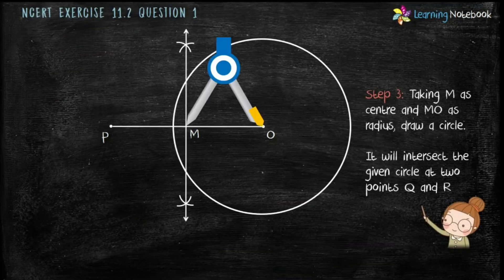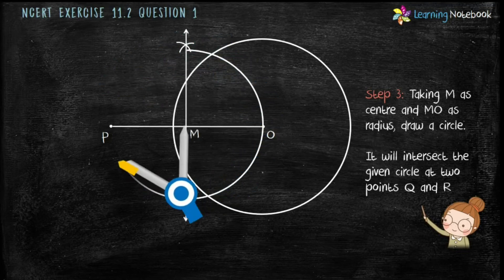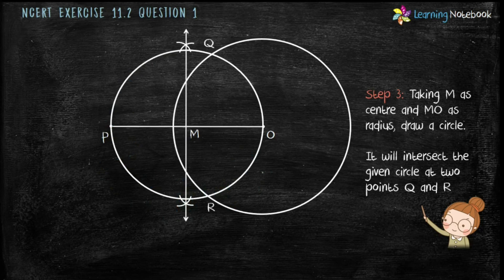Now, in step 3, take M as center and MO as radius. Draw another circle. It will intersect the given circle at two points Q and R.